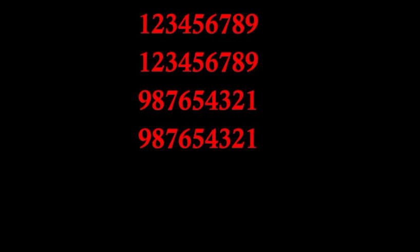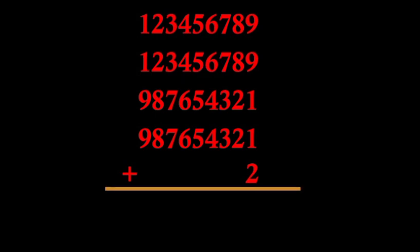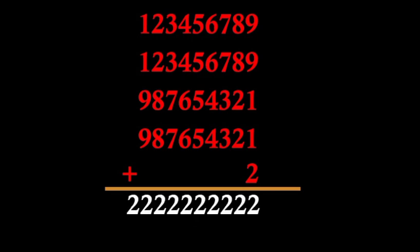The fourth number is the reverse of the second number, together with the number 2. If we add all these five numbers, then we will get a number which is a 10-digit number equal to 2222222222 — that means a 10-digit number with ten 2s.